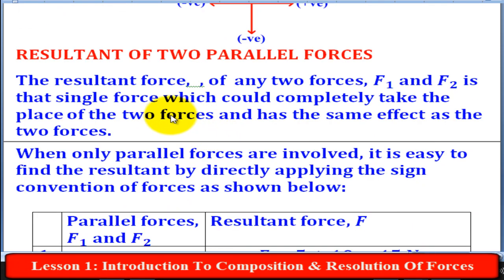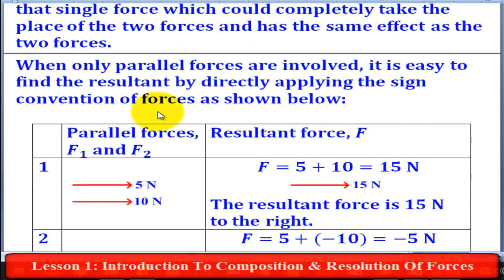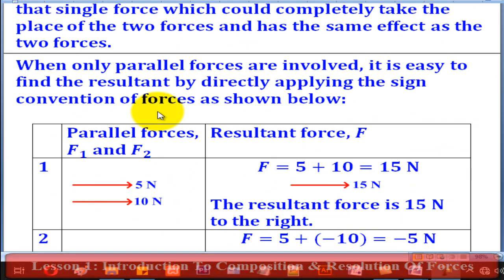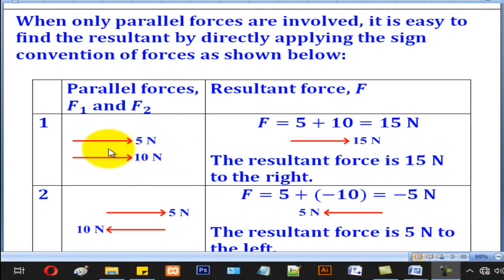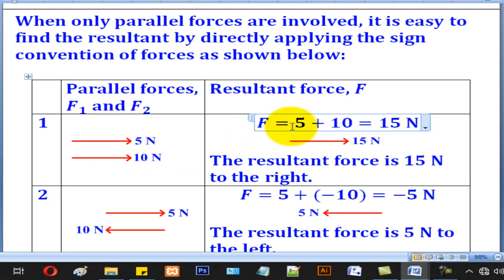We shall see this through examples of parallel forces, using a pair of parallel forces. Case 1 has two parallel forces all in the same direction and heading to the right. In that case, both forces will be positive, and therefore the resultant is got by adding the two to get 15 N, and the direction will be to the right.